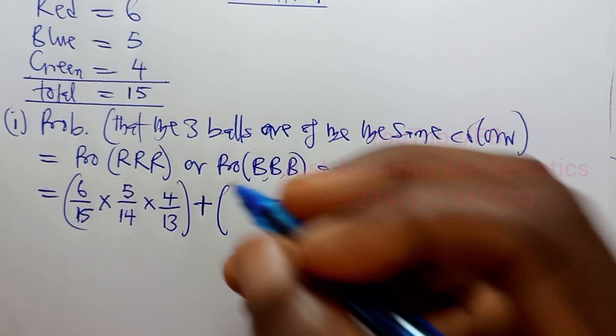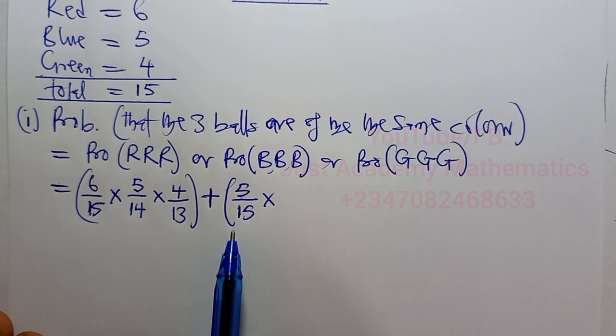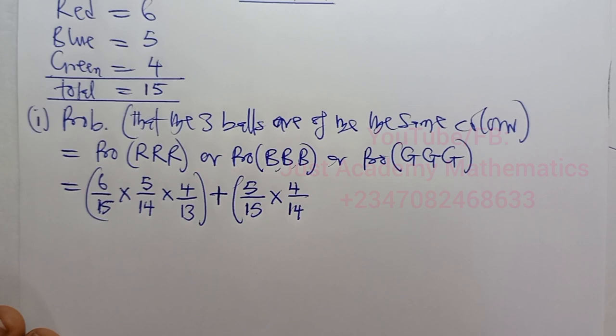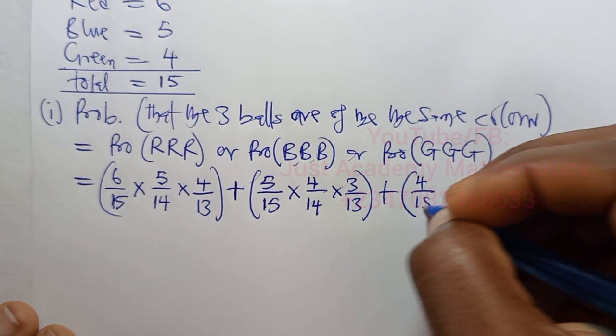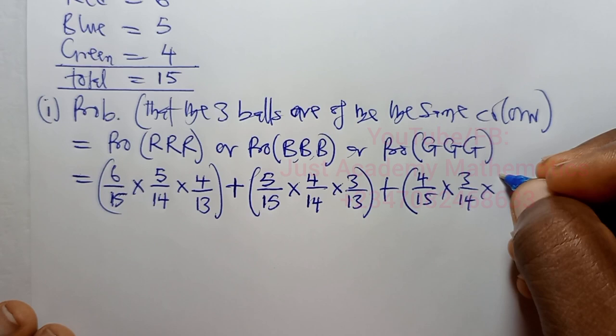After drawing the first blue, how many blue are remaining? Four. So the second draw is 4 over 14. Then the third is 3 over 13. For green: the first is 4 over 15, the second is 3 over 14, and the third is 2 over 13.